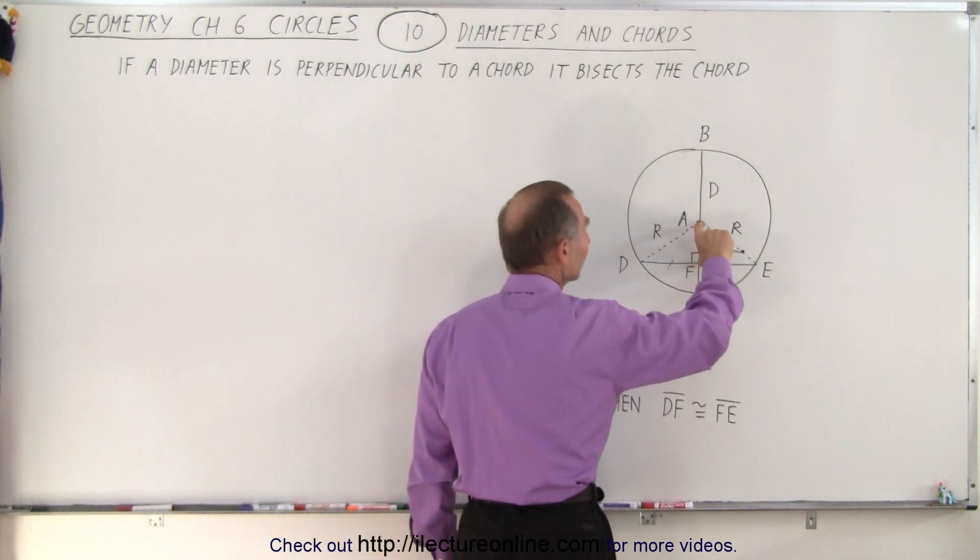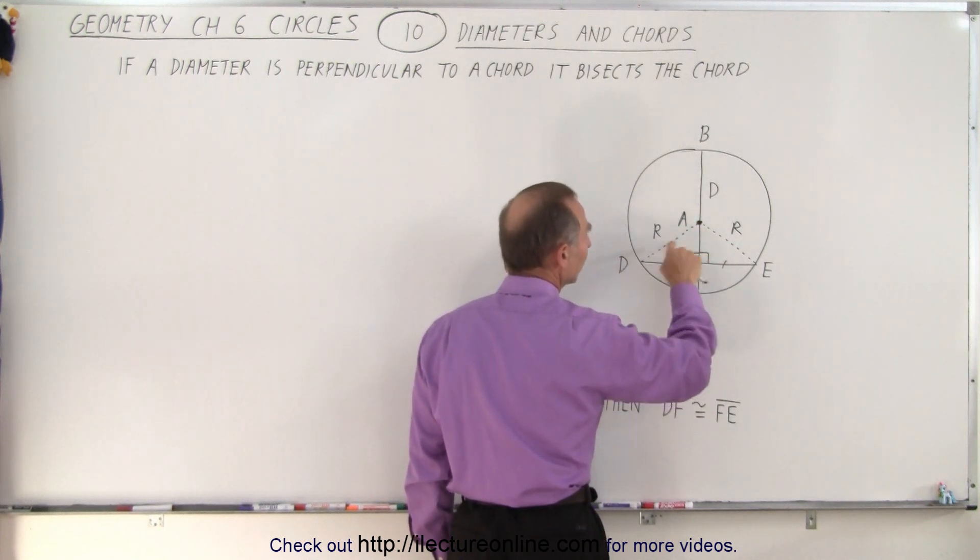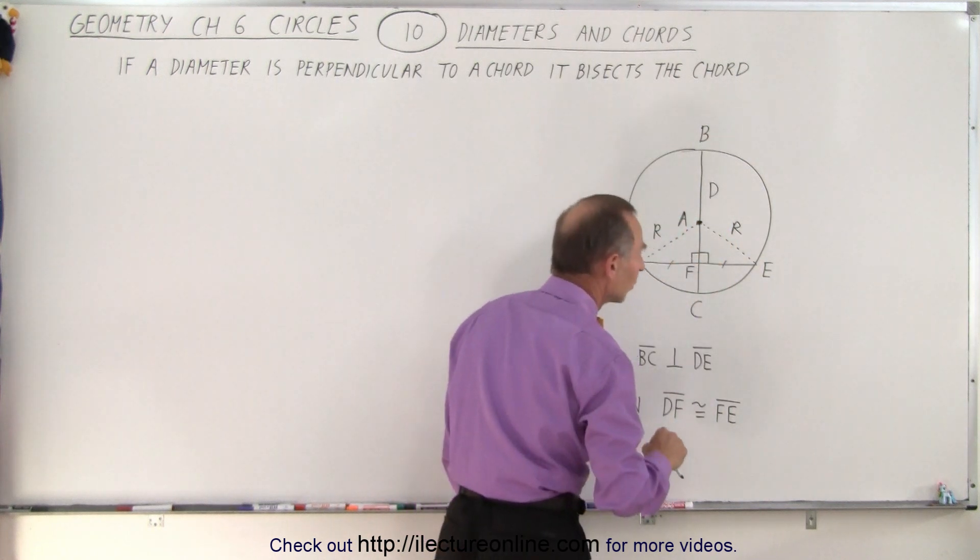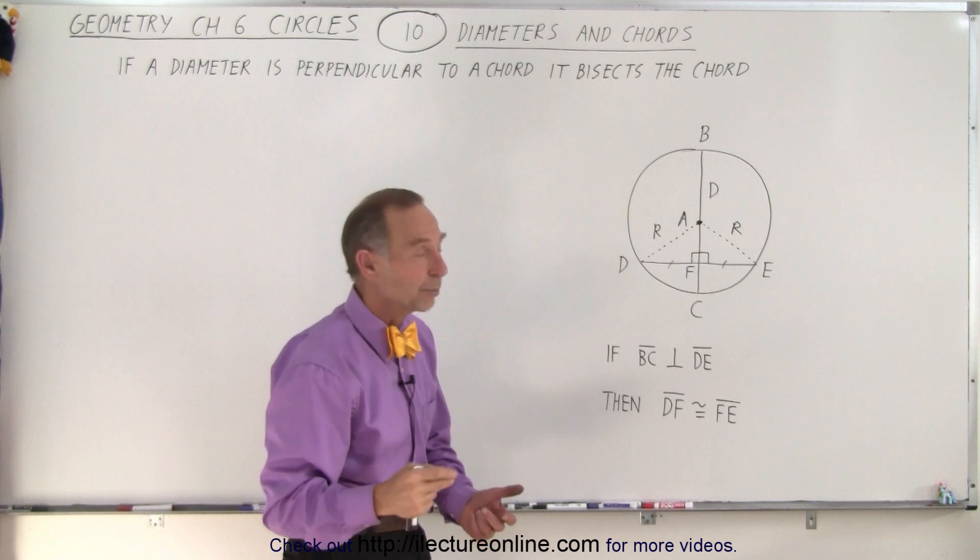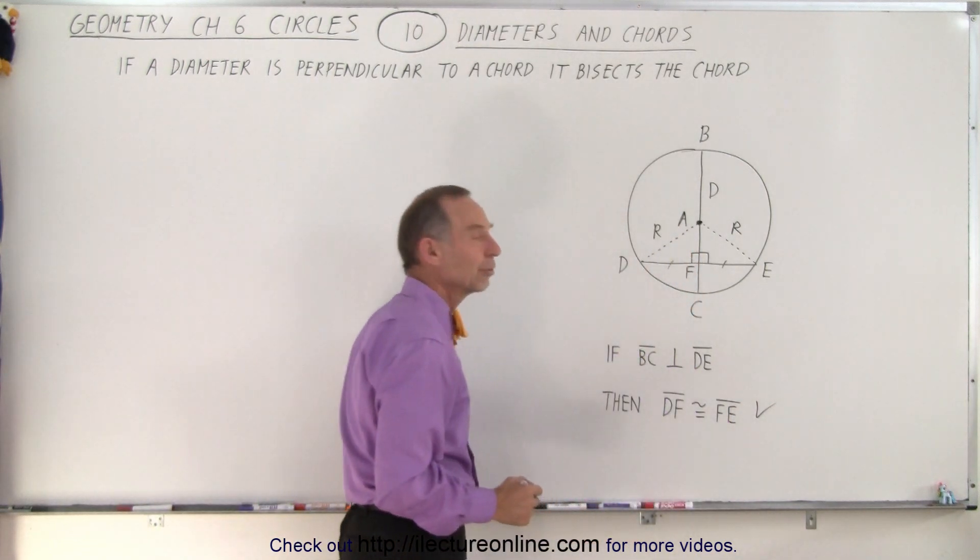Both have this side equal right here, and they both have an angle equal. Because of that, if two sides are equal and one of the angles are equal, by definition the third side must be equal as well. Therefore, we can conclude that this must be true.